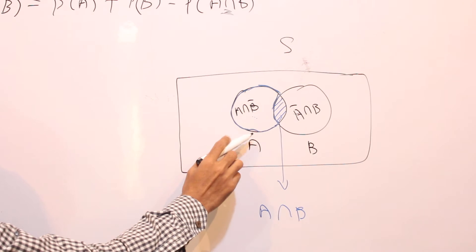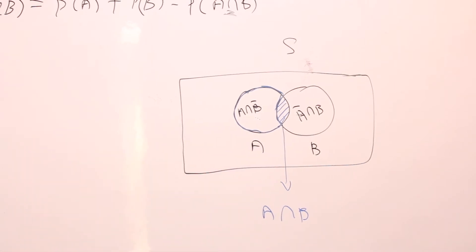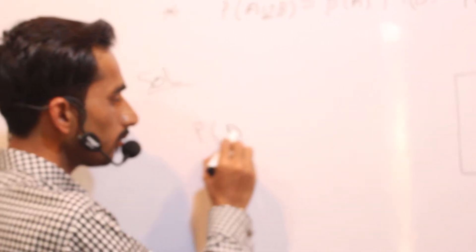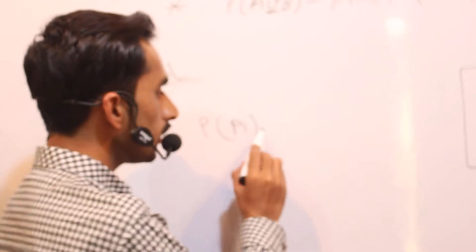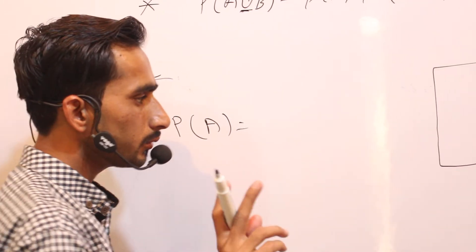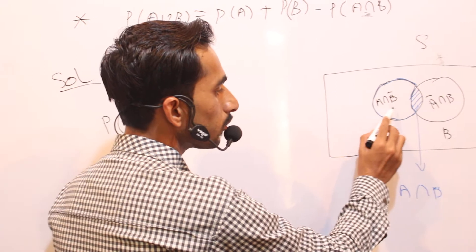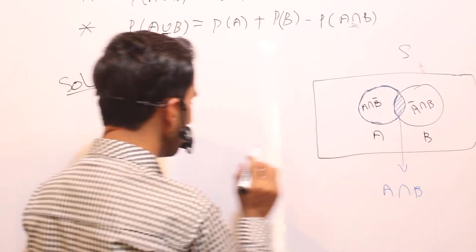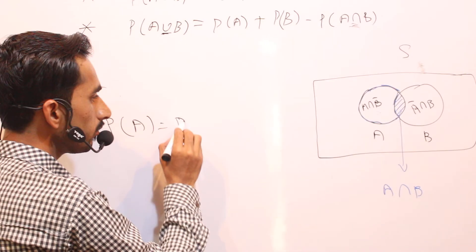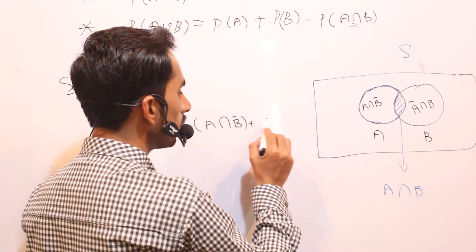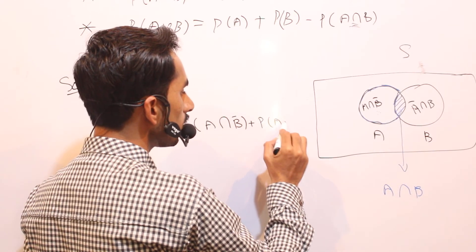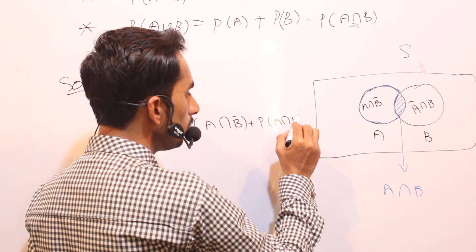If we talk about event A, it is composed of two portions: portion one and portion two. So probability of A equals probability of A intersection B-bar plus probability of A intersection B. This is equation number one.